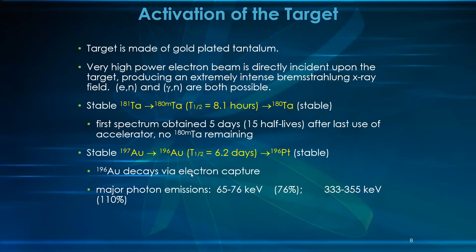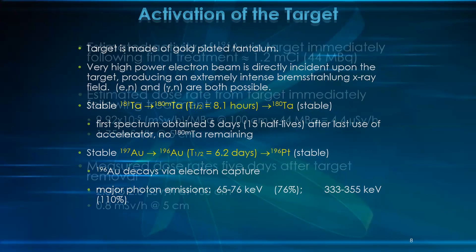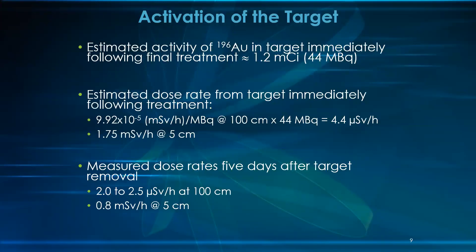Gold decays via electron capture, with major photon emissions around 65 to 76 keV — occurring at approximately 76% abundance — and around 110 keV emission as well.